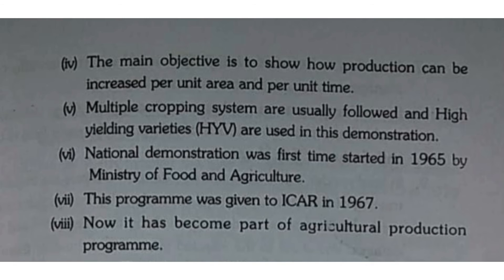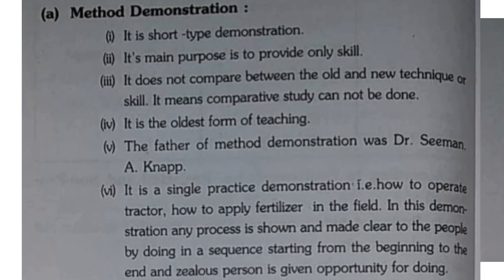Multiple cropping systems and high-yielding varieties are used in this demonstration. It was first started in 1965 by the Ministry of Food and Agriculture, then given to ICAR in 1967, and has now become a part of the Agricultural Production Program. The best one among the three types is national demonstration.